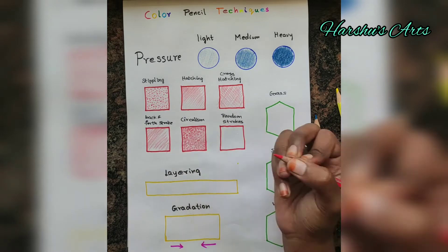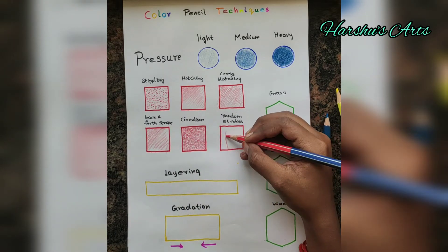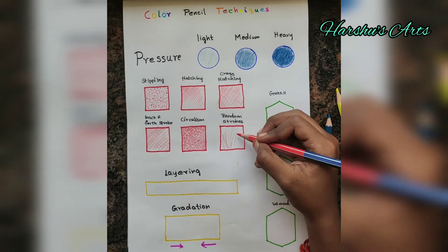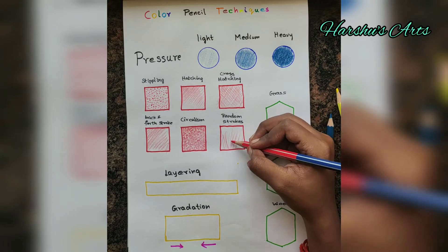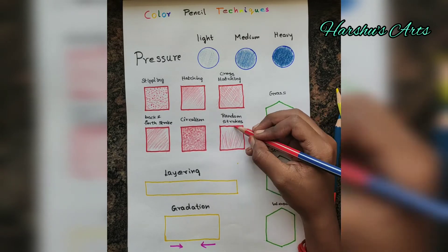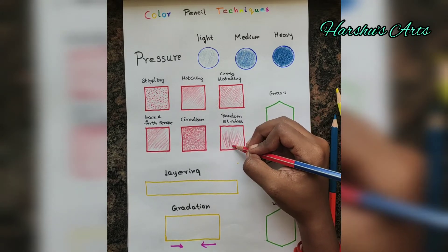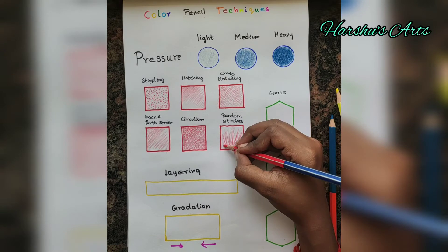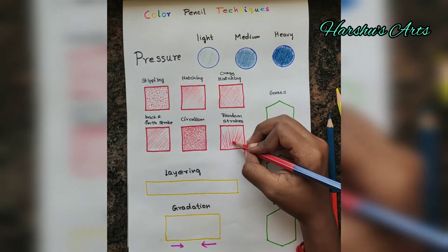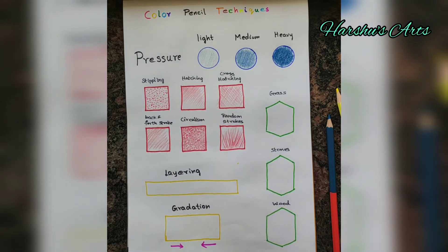The next technique is random strokes. We use lines dropped in random strokes. The best example is grass. We use random strokes to create cloth-like effects as well.